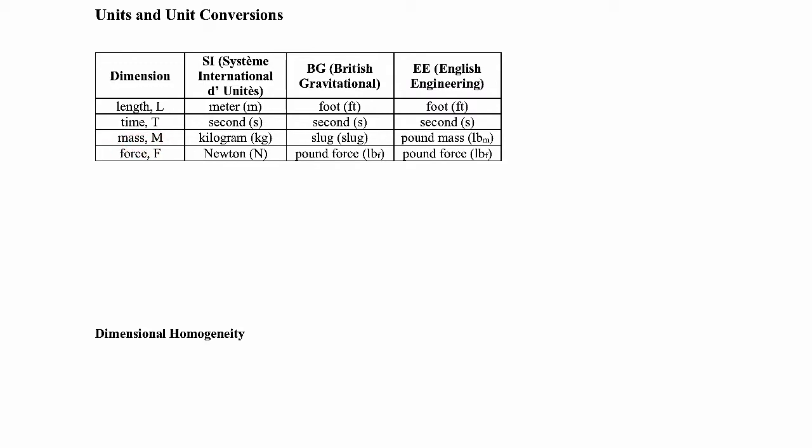For mass, in the metric system we have the kilogram. British gravitational we use the slug. And in the English system it's pound mass. And I like to put a subscript M on the LB there to indicate pounds mass. Often that M is just not given, it's just LB.